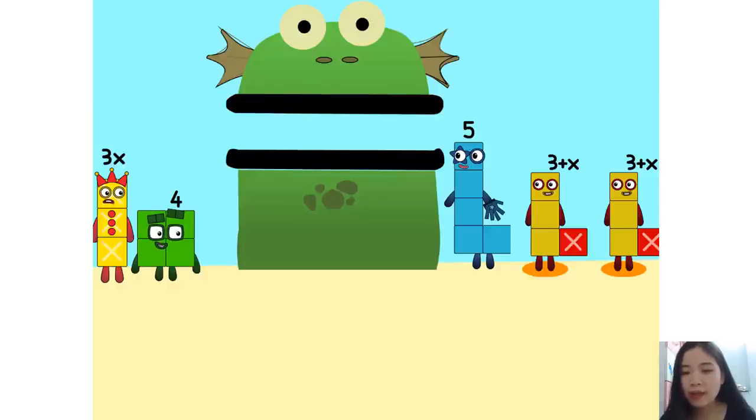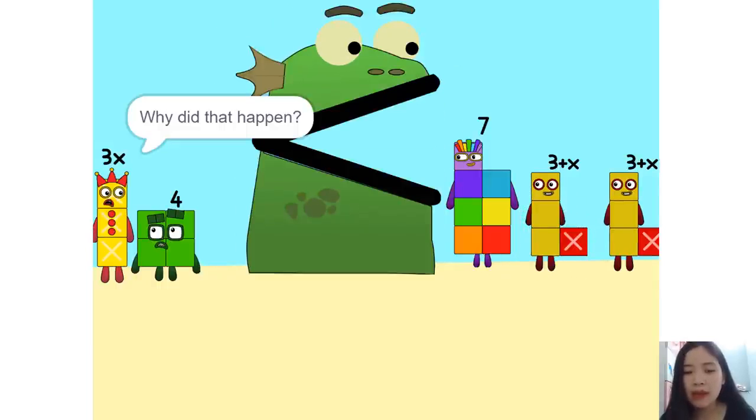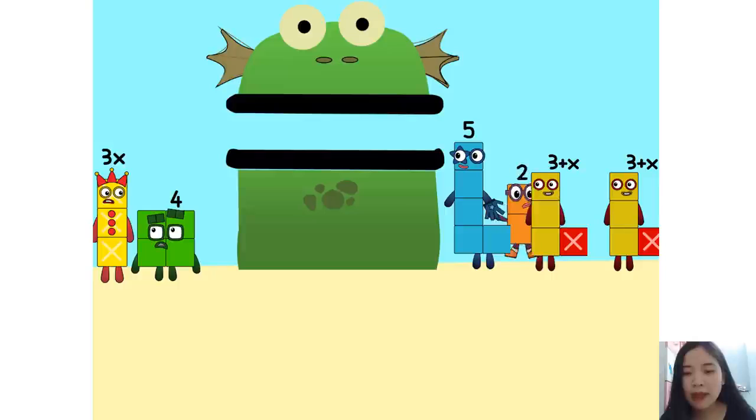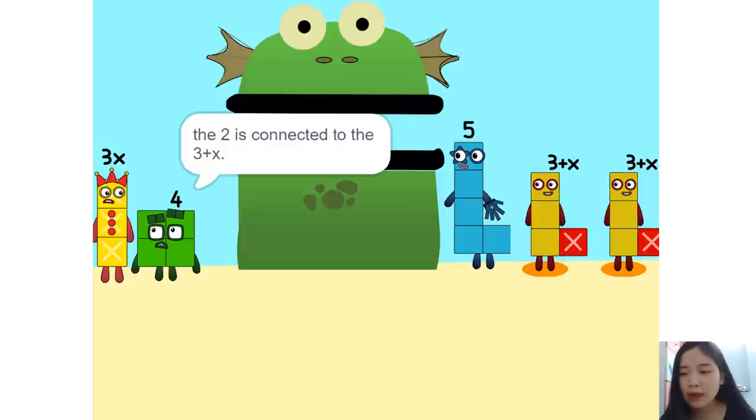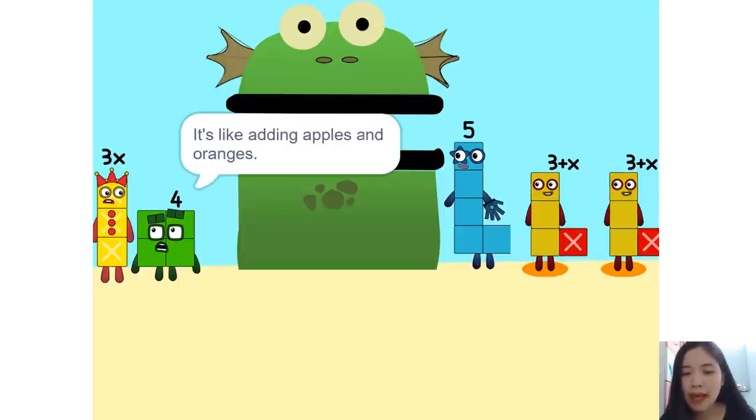I see something. We can add these. Why did that happen? Because the 2 is connected to the 3 plus x. So it's like adding apples and oranges.